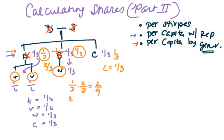So that means T gets two-ninths, V gets two-ninths, and N gets two-ninths, and C gets one-third.